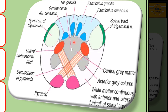Starting from posteriorly, we'll see the tract here which is the fasciculus gracilis. Lateral to the fasciculus gracilis, we'll see the next tract, which is the fasciculus cuneatus. And if we also follow laterally, we see the tract of the spinal nucleus of the trigeminal nerve. These tracts are seen on the posterior and lateral aspect.